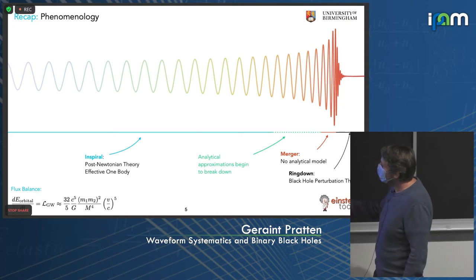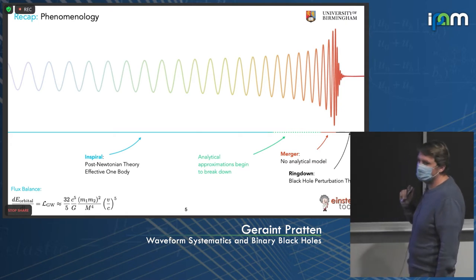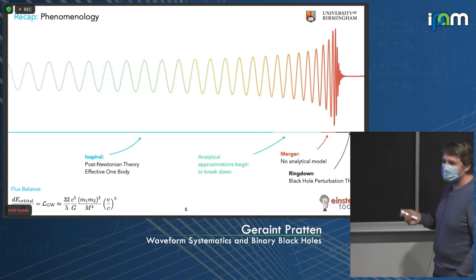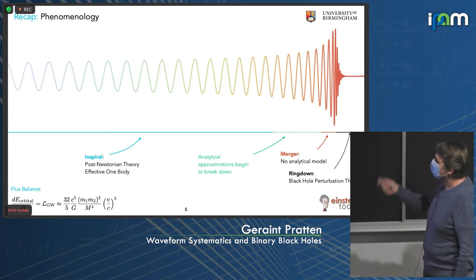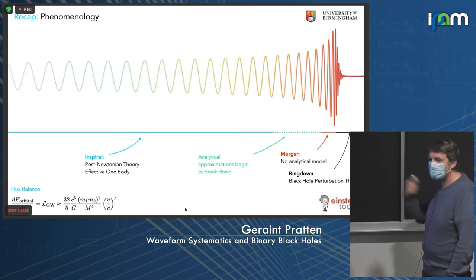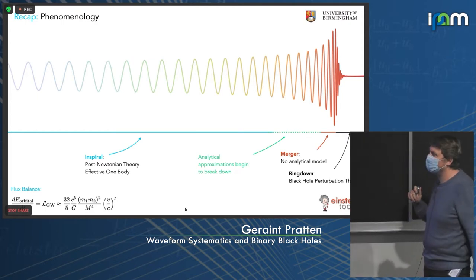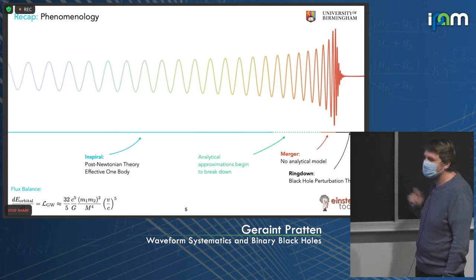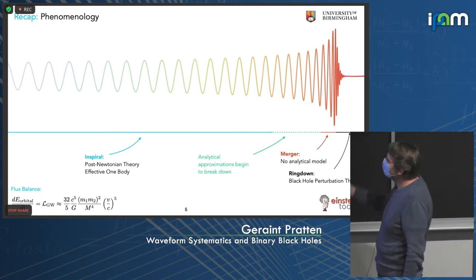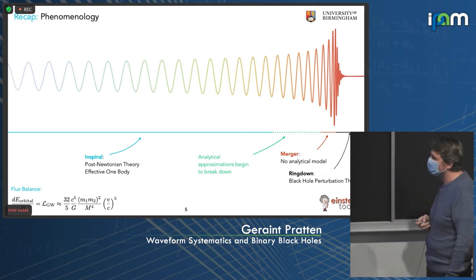This means we need to appeal to numerical relativity to capture the late inspiral and merger. NR simulations need to really span the parameter space to understand these strong-field effects. Once we go to the ringdown, we can invoke black hole perturbation theory to understand this late stage. So we can do the start and the end analytically, but numerical relativity is crucial in the merger regime, certainly for comparable mass ratios.